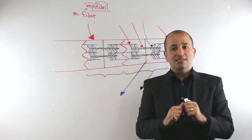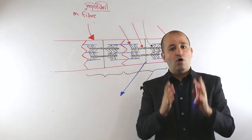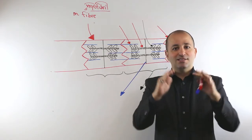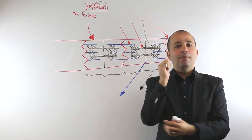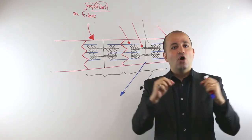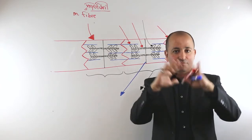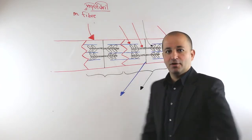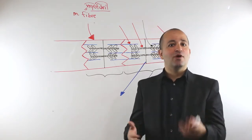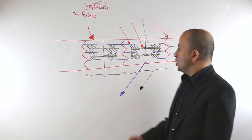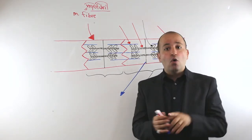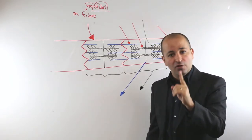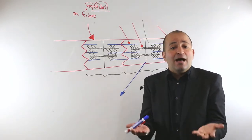This contraction is the cause of all movements. Right now I just did this movement — it happened by contraction of muscle fibers, and as a result the whole muscle contracted. So let's go deep into one muscle fiber, or myofibril, to see how this contraction is happening.